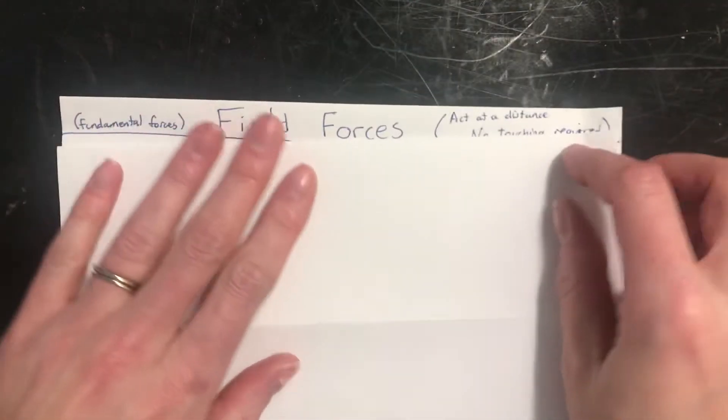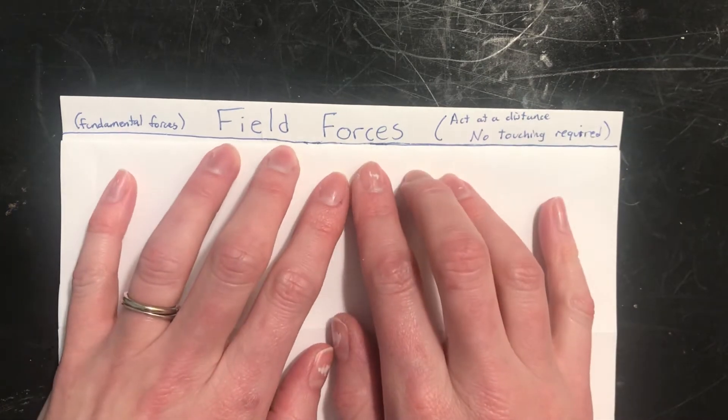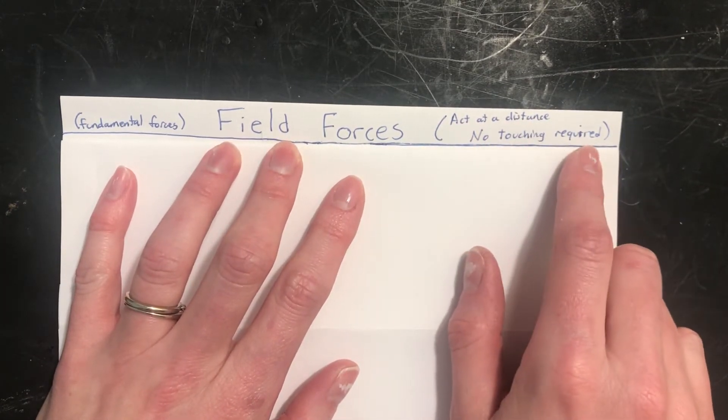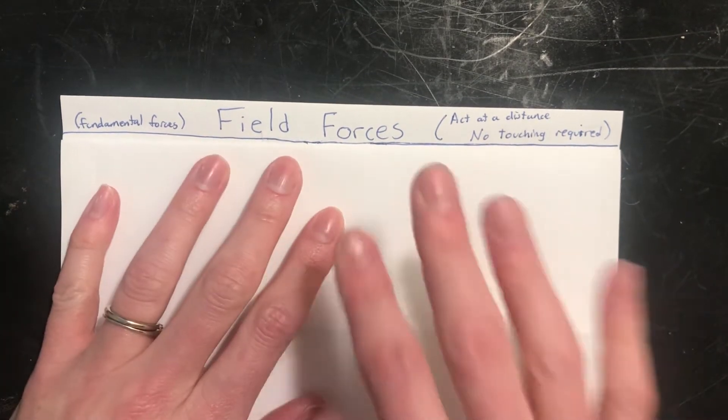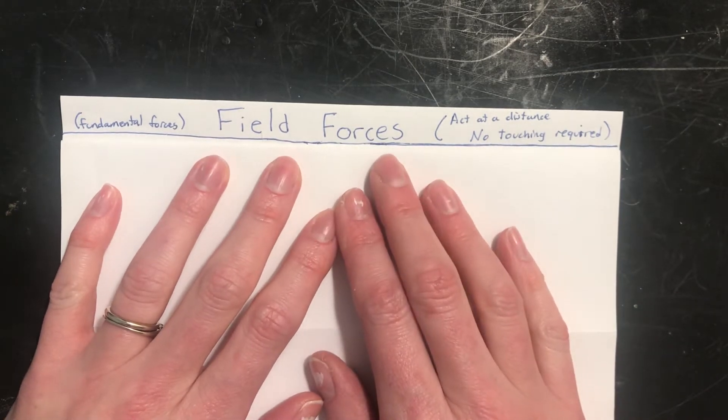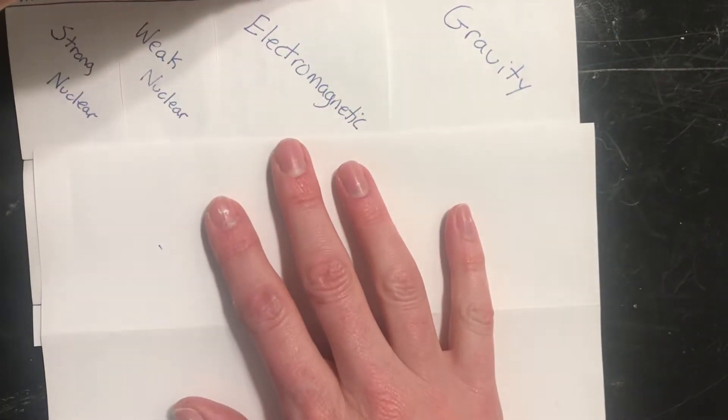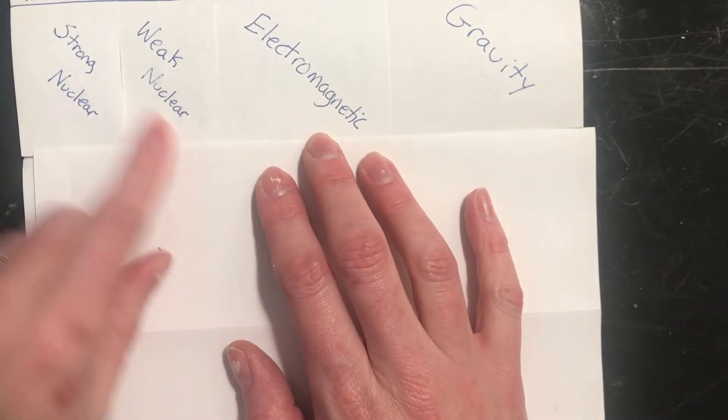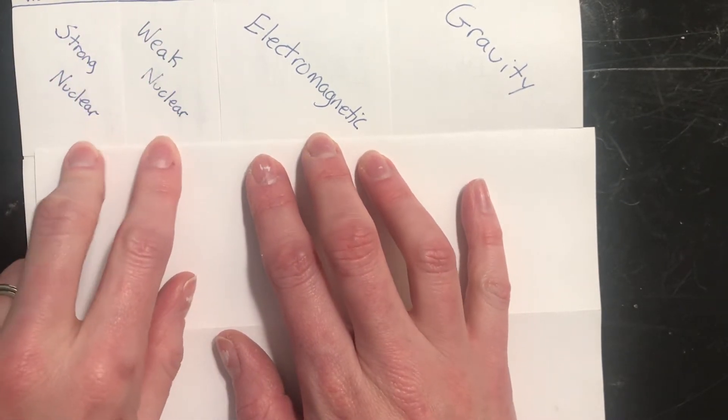All right, so on this side, we're going to be talking about field forces, okay, and we've talked a little bit about this before. These are forces that act at a distance, that means there's no touching required. These are also called fundamental forces, because it turns out all the other forces are really just these on a different level. The field forces are gravity, electromagnetic forces, weak nuclear forces, and strong nuclear forces. That's why these are kind of together as their own.